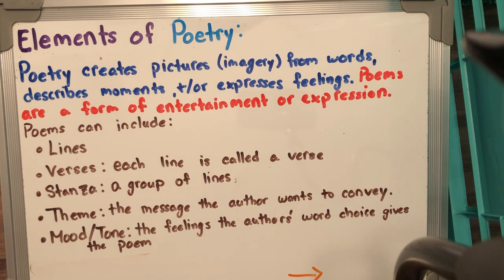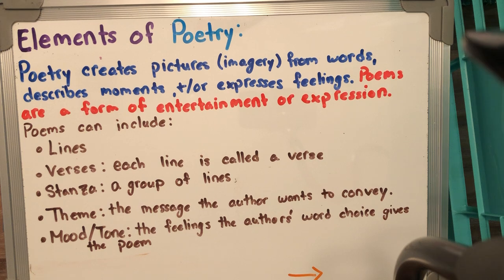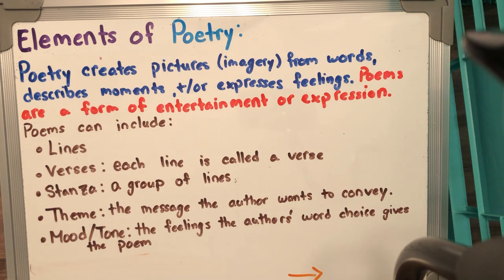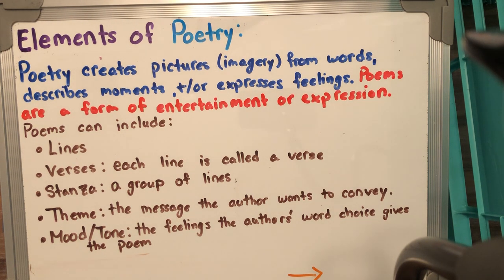Poetry creates pictures or imagery from words. It describes movement and/or expresses feelings. Poetry is a great way for poets — people who write poetry — to create a picture in their readers' minds about what's happening, to make connections with the reader. If they're expressing some type of feeling, the reader could really understand and have experiences of those types of feelings. That's why poetry is one of the most common forms of expression.